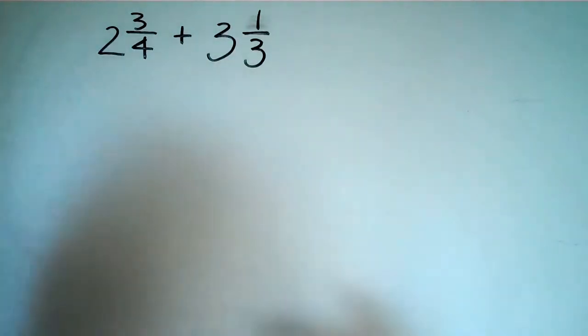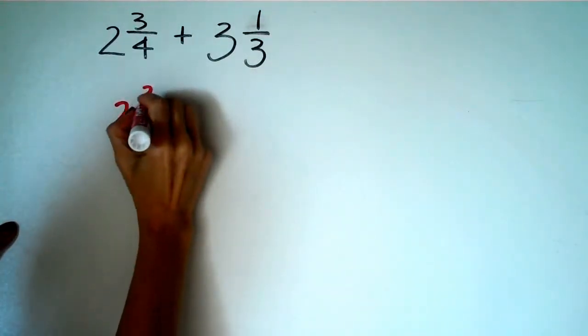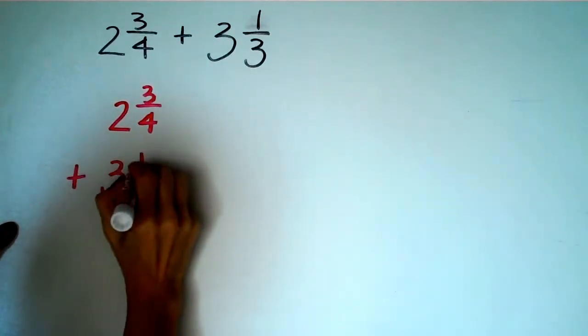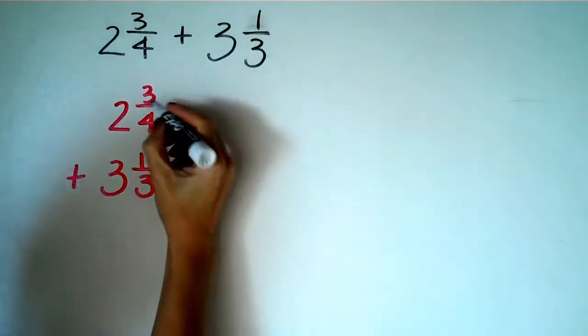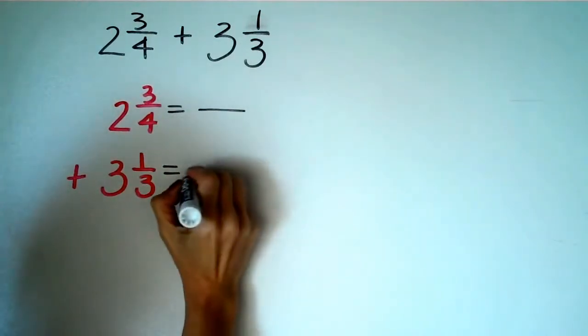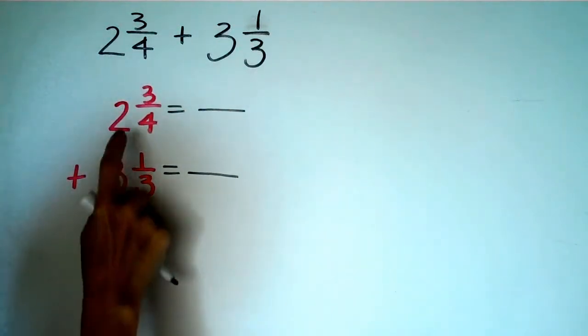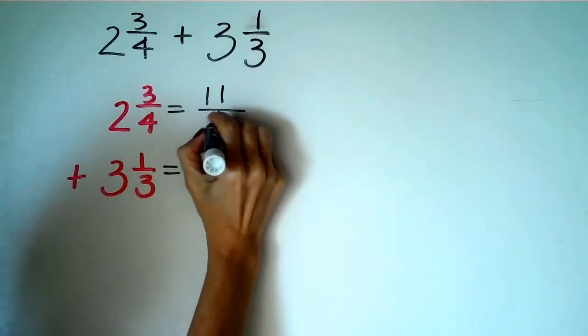We have two and three fourths plus three and one third. The first thing I'm going to do is rewrite this whole thing vertically. Two and three fourths plus three and one third. And I'm going to change these right away into improper fractions. So I'm not doing any changing other than changing the format that it's in. So two times four is eight plus three is eleven over four.